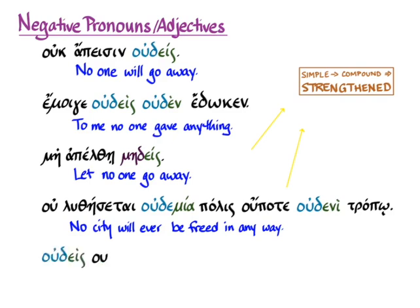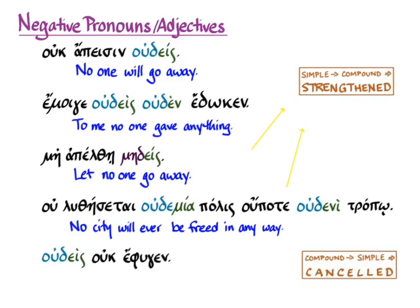On the other hand, oudeis ouk ephygen — with the compound negative first, if the compound negative is followed by a simple negative, the two negatives cancel each other out in the way that we think of double negatives in English. So this means 'no one did not flee,' or, to make it more clear in English, 'everyone fled.'